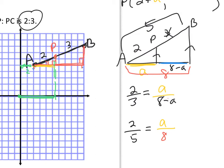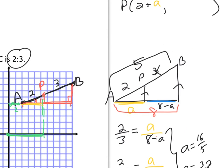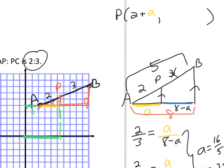Solving either proportion gives a = 16/5, which is three and one-fifth, or 3.2 as a decimal. Coming back to the x-coordinate of P: I was adding two to a, so the x-coordinate is two plus 3.2, which equals 5.2.